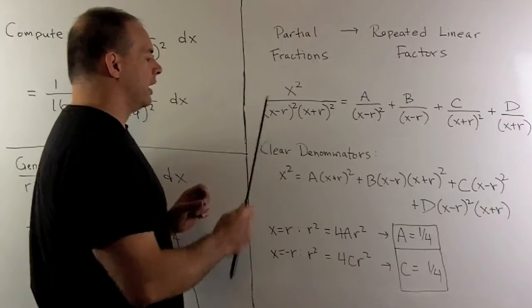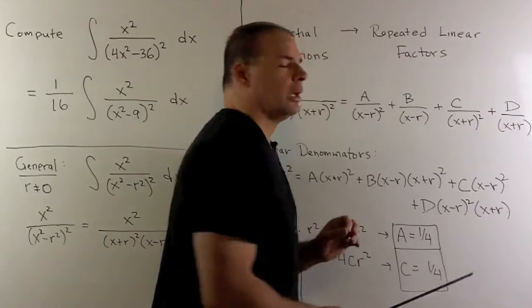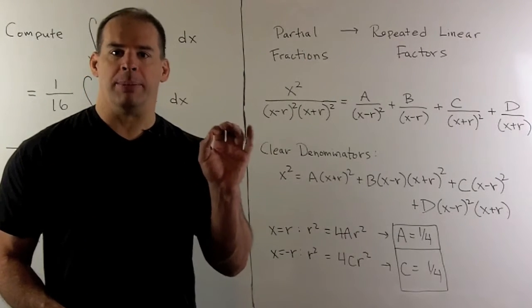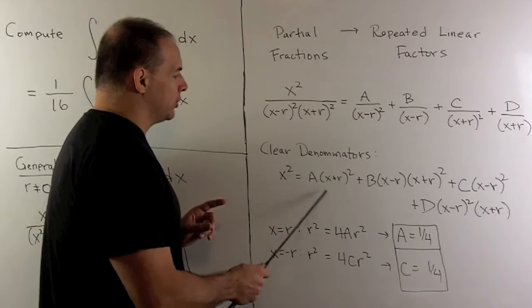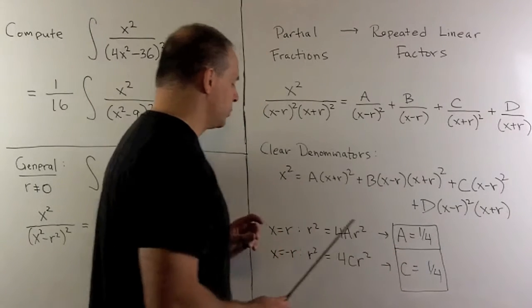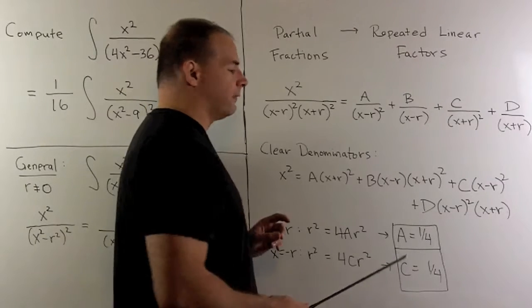Now we clear the denominators. We get this equation here. If I'm looking for easy points to evaluate to get formulas for a, b, c, and d: If I let x be equal to r, we'll get a term here, but then all the others are going to vanish. So we just have r squared equals 4a r squared, or a is equal to 1 fourth.